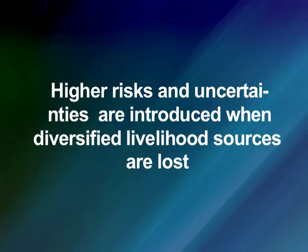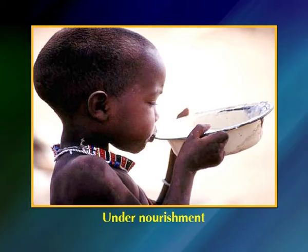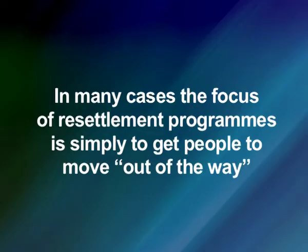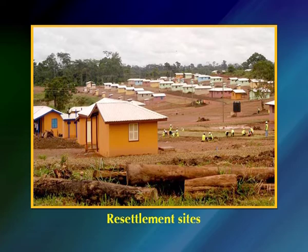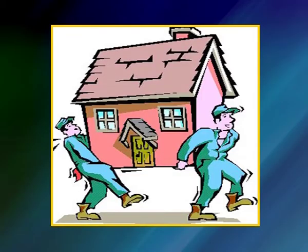Higher risks and uncertainties are introduced when diversified livelihood sources are lost. Loss of livelihood and disruption of agricultural activity can adversely affect household food security, leading to undernourishment. Higher incidence of disease associated with deteriorating water quality can result in increased morbidity. In many cases, the focus of resettlement programs is simply to get people to move out of the way to the resettlement sites as quickly and smoothly as possible. Once people are relocated, the resettlement program usually fizzles out or loses momentum. The resettled people are most vulnerable to being forgotten once physical relocation is complete — a waning of interest sometimes referred to as developer's fatigue.